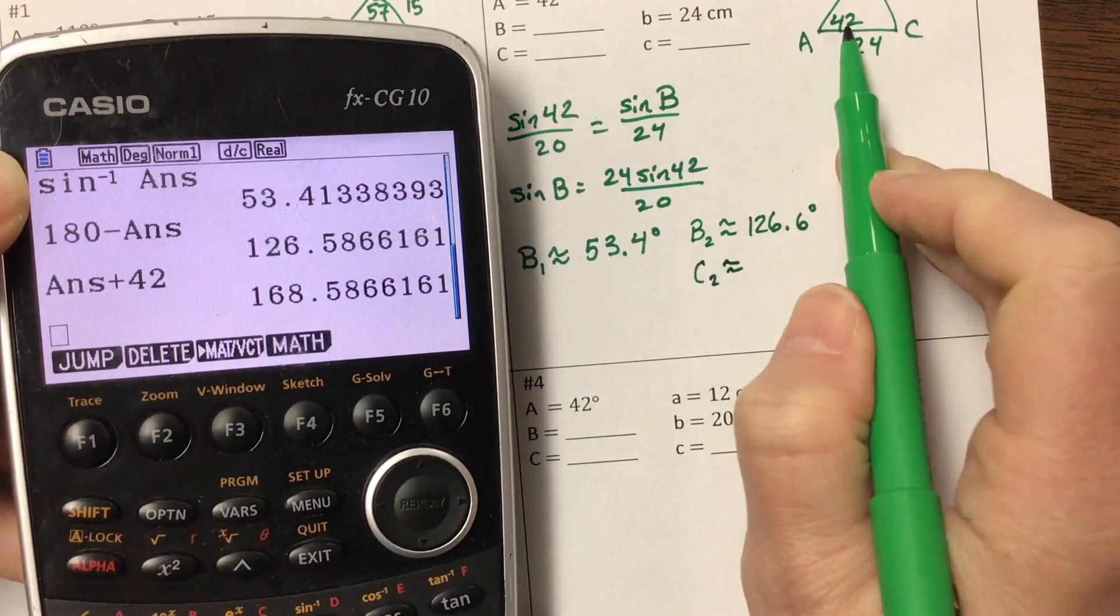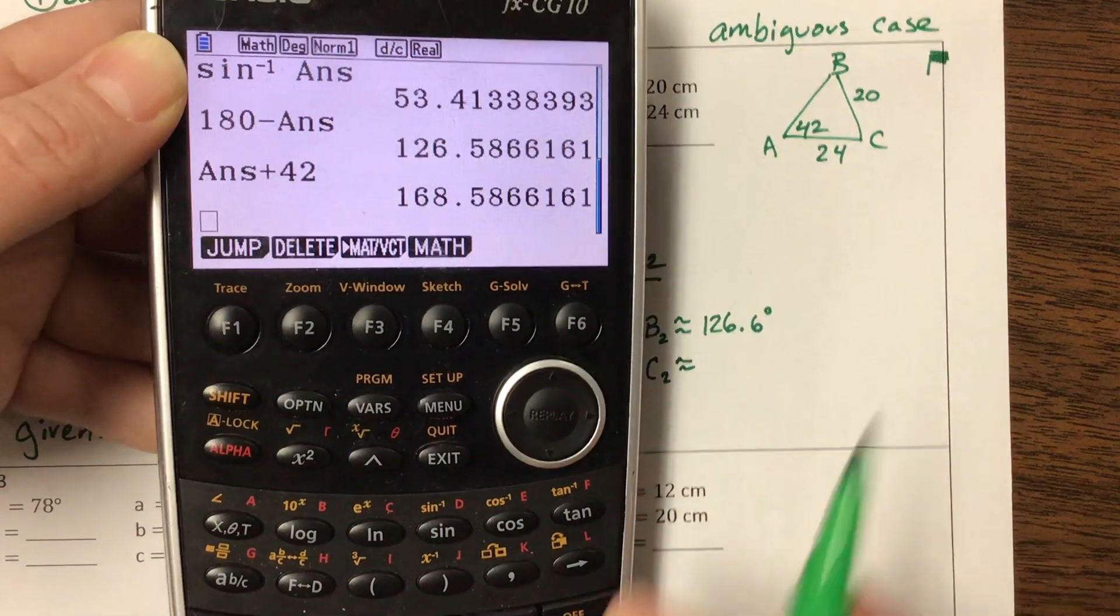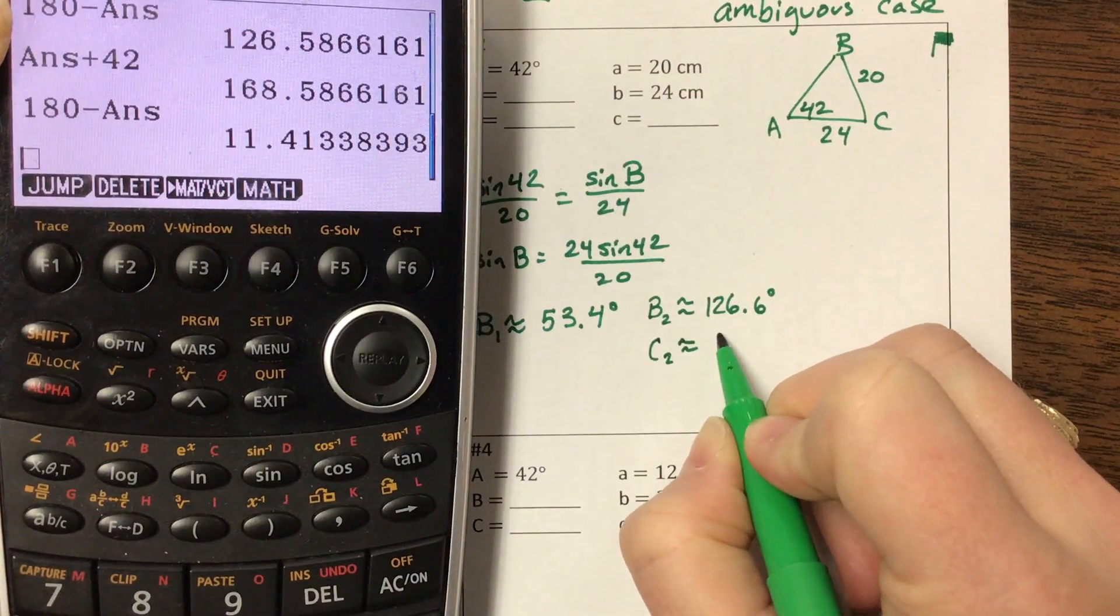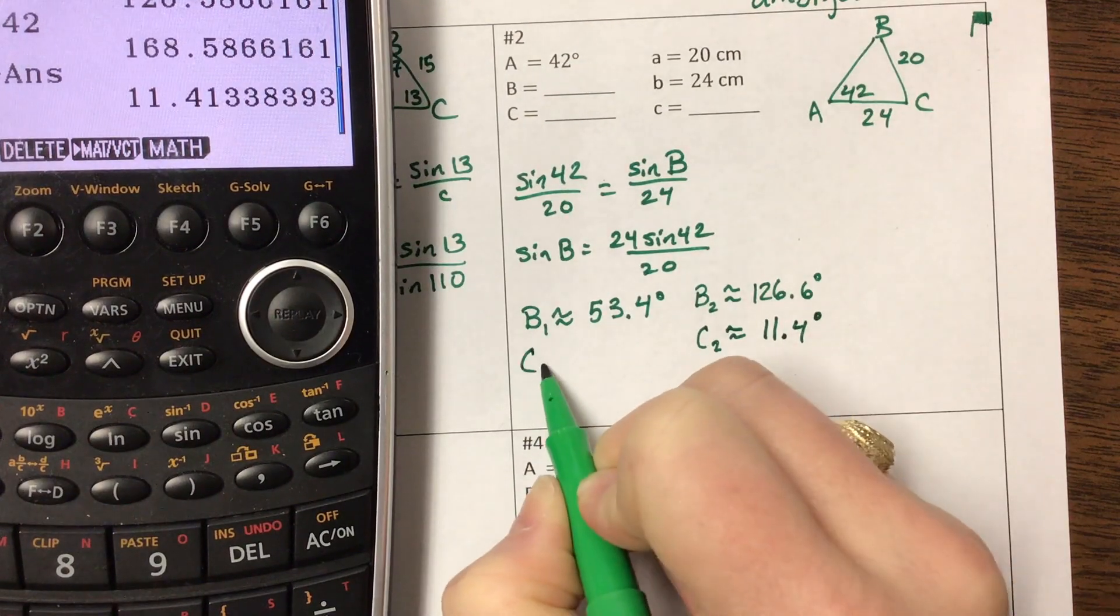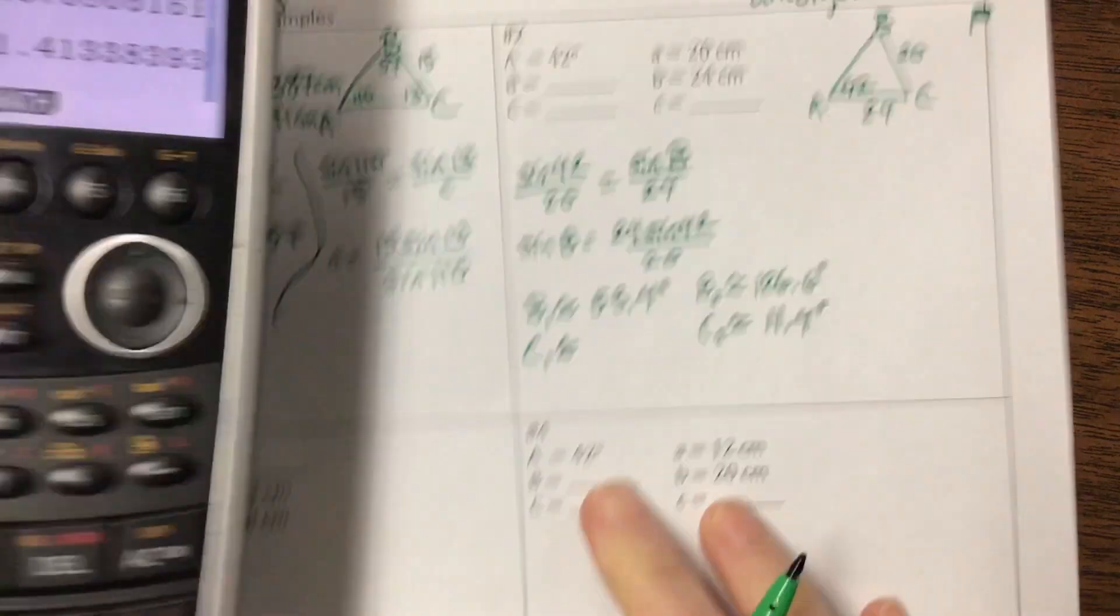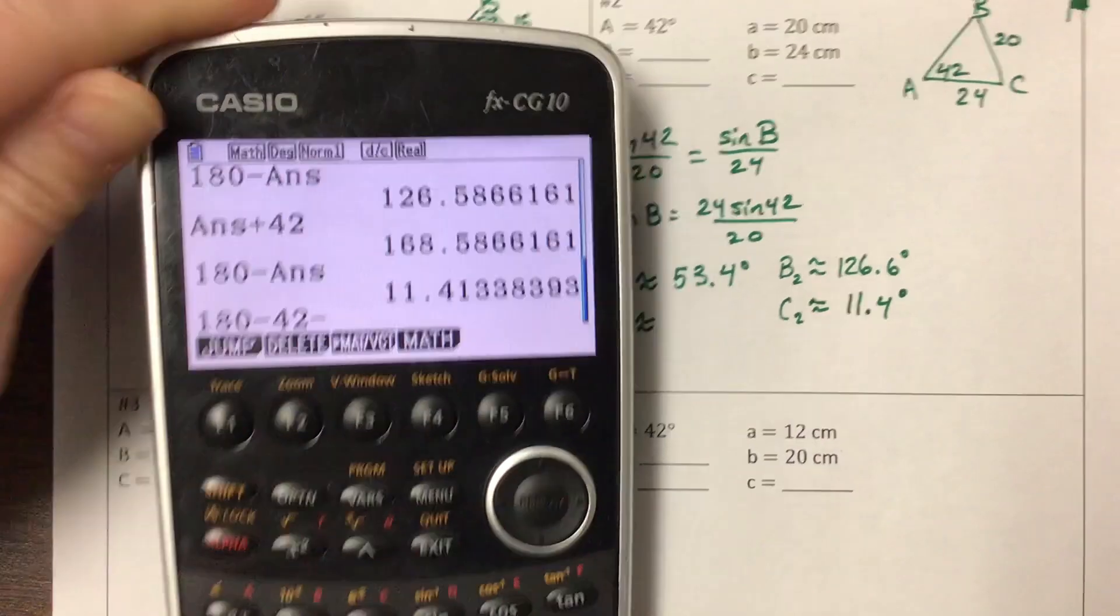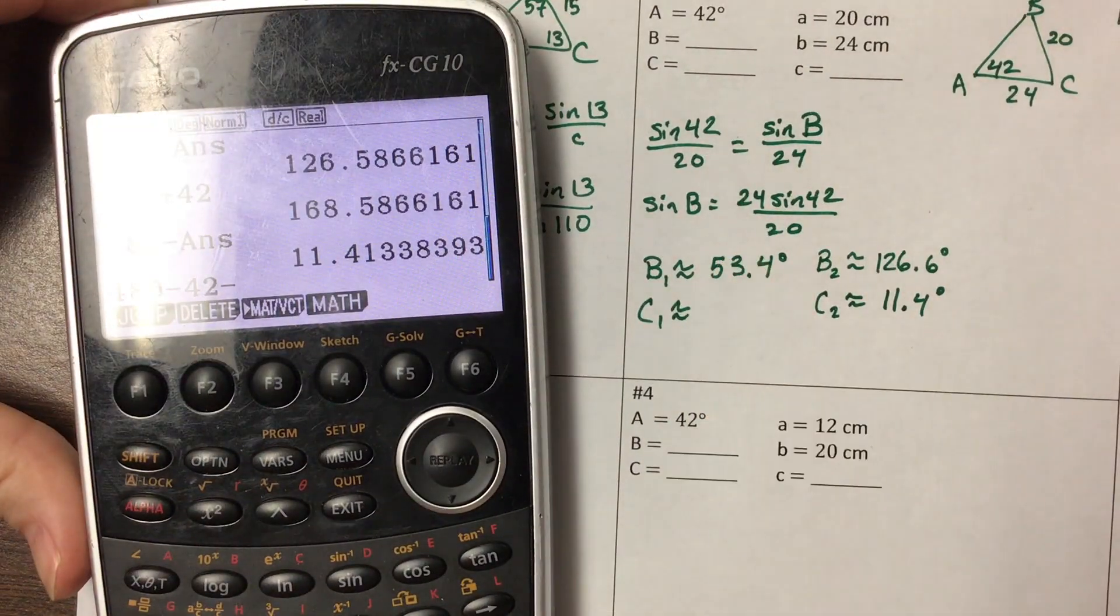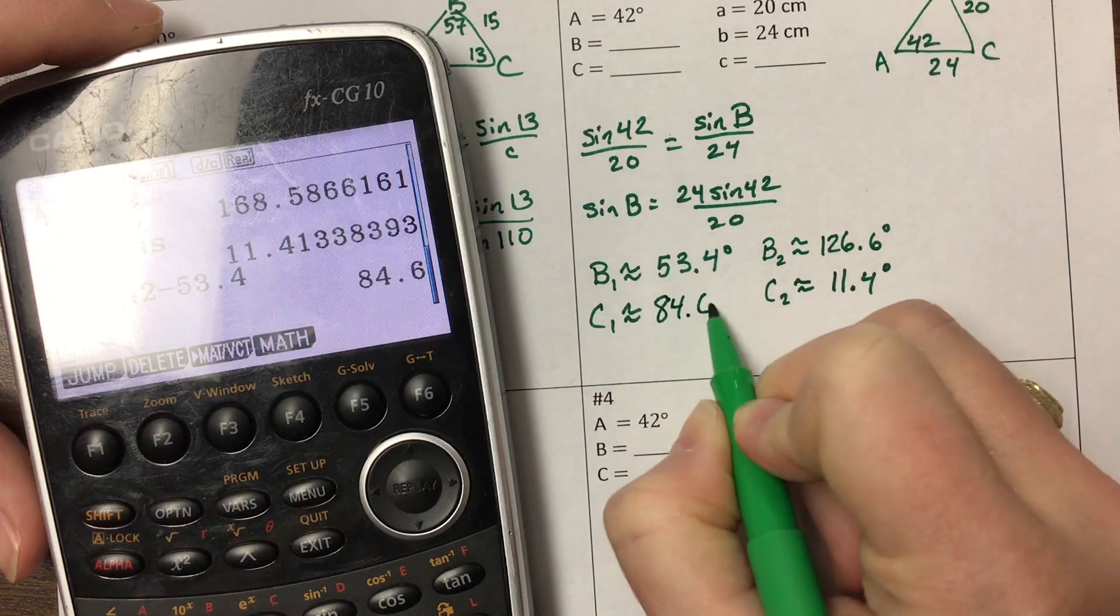And actually, we can find C2, because it would be, one of the angles would be 42, the other would be this, and I add those, so then 180 minus that answer, C2 would have to be 11.4 degrees. Let's go back and find C1 real fast. That's big C1. So then I had 180, I subtracted away that 42, and then I found that my first B, my B1, was 53.4, so when I subtract that out, that leaves 84.6.